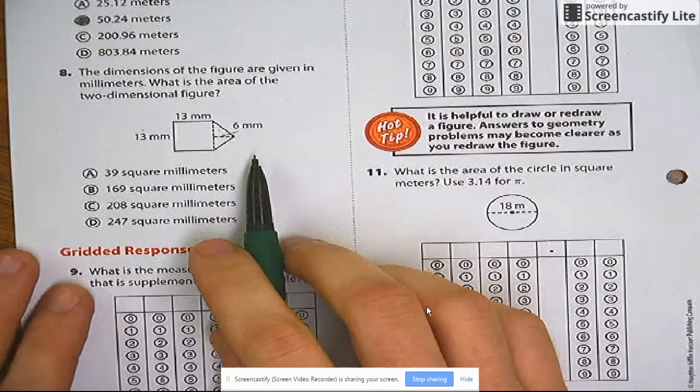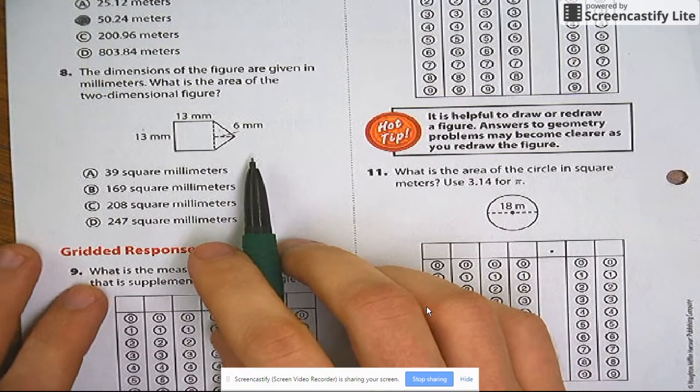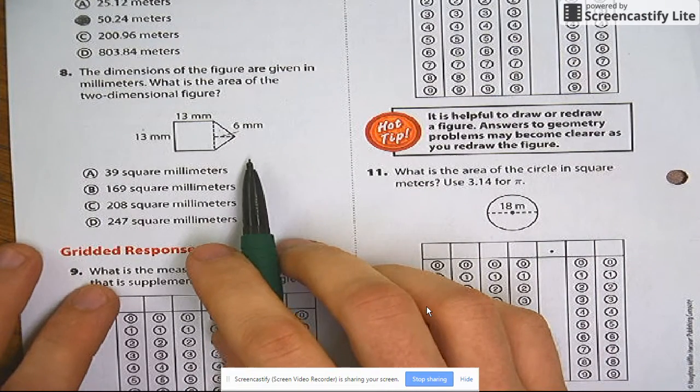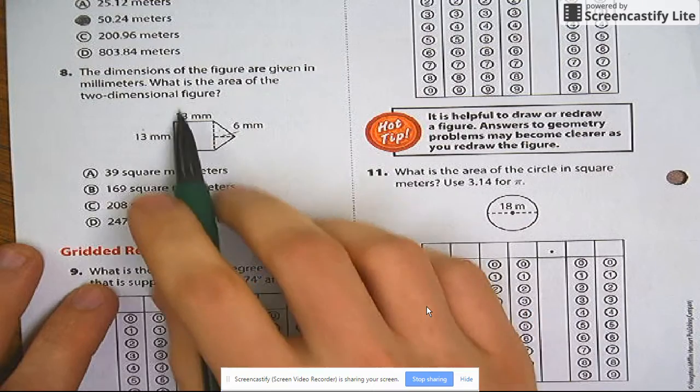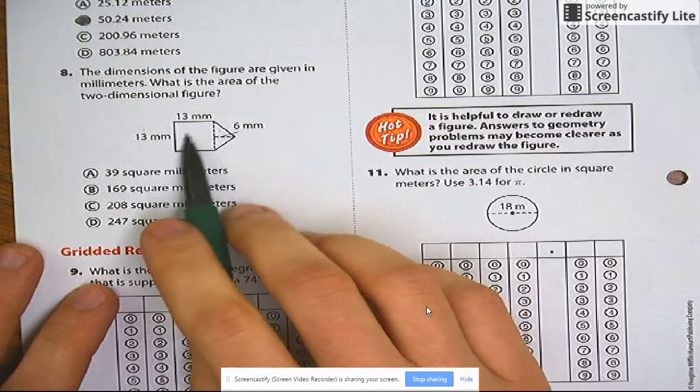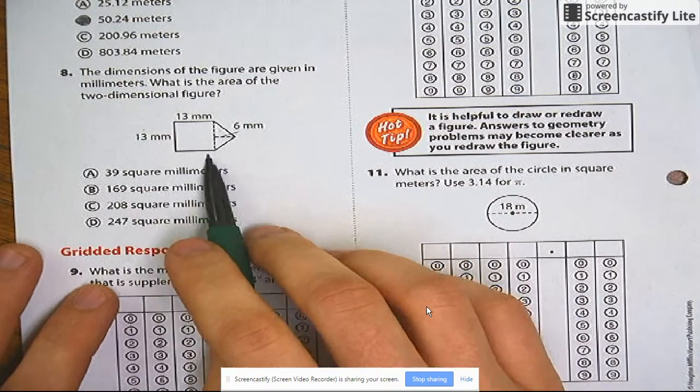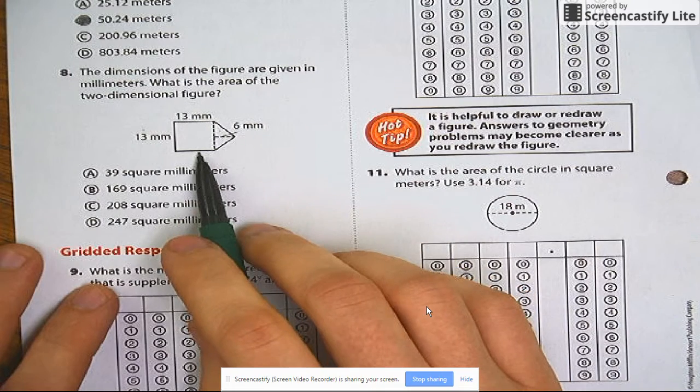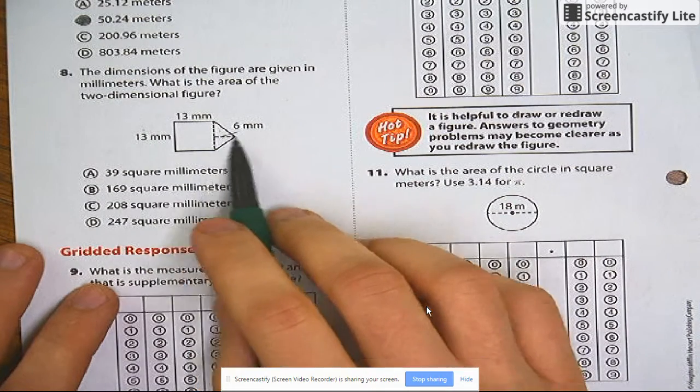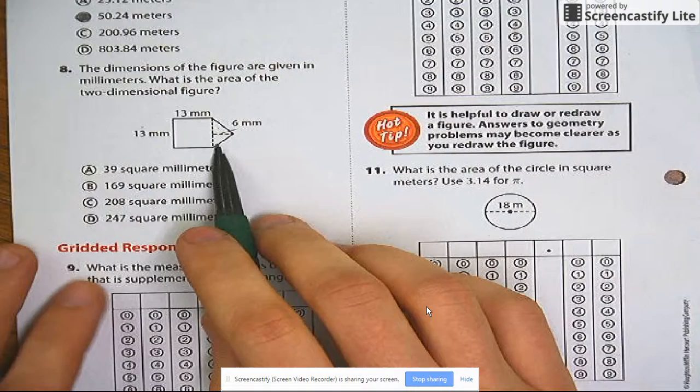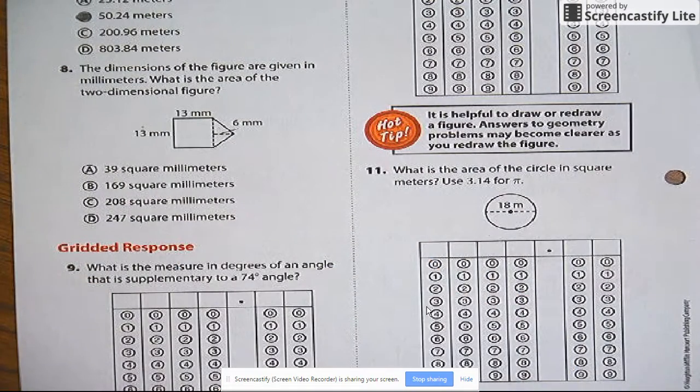Number 8. The dimensions of the figure are given in millimeters. What is the area of the two-dimensional figure? Okay, so I'm looking for area of this thing. I don't have a formula for this kind of shape, but I do have a formula for simpler shapes, such as a square and a triangle. Take a look at that. Okay, my formula is for the area of a square and triangle. I'm going to look them up.